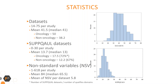Maximum number of SUPPQUAL datasets in studies is 30, while the mean is 13.7. As expected, there are some differences between oncology and non-oncology studies. Oncology studies have more total datasets — mean 50 versus 38 — and more SUPPQUAL datasets with mean 17.5 versus 12.2.